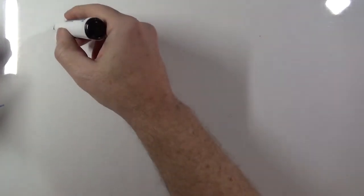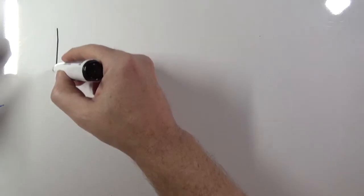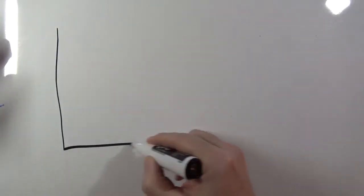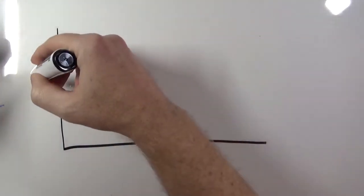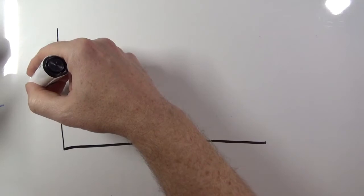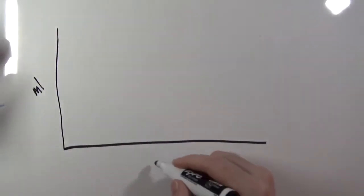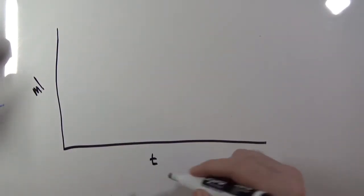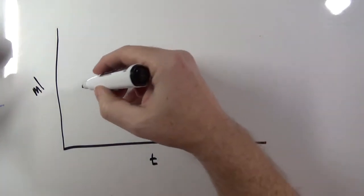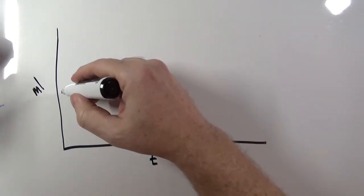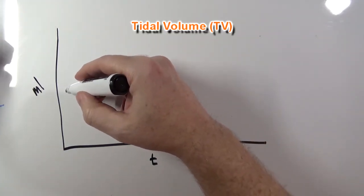If I were able to record the lung volumes in the form of a graph, it would look something like this. On the Y axis I'm going to have milliliters, and on the X axis I would have time. So let me start with normal tidal volume.